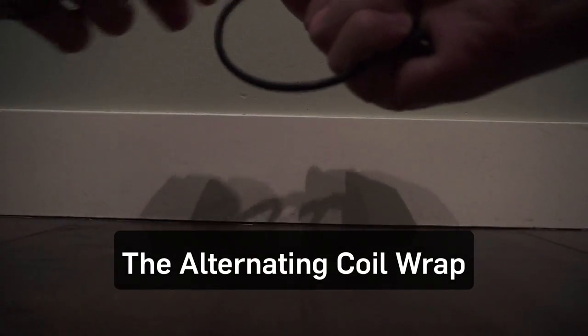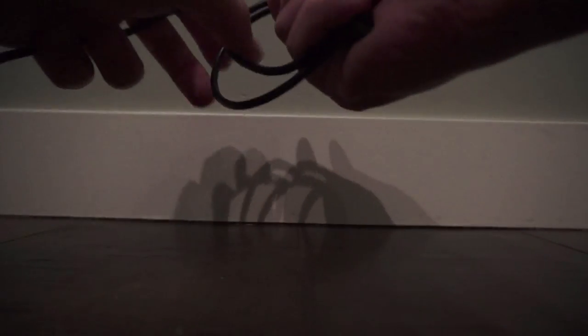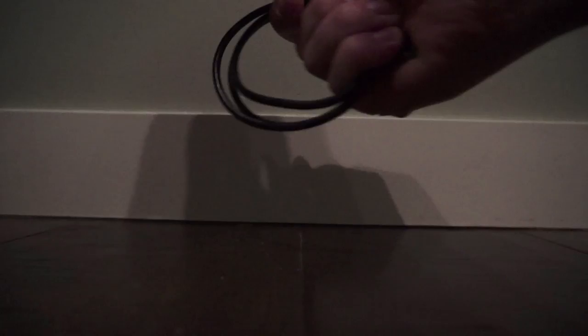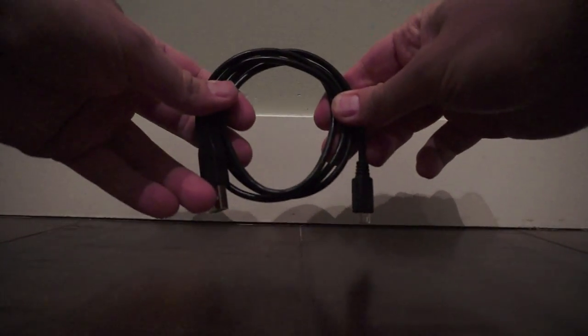First, let's learn the alternating coil wrap. If you need to make sure you don't end up with kinks and tangles in your cable, alternate the direction of your pull with each loop. This way your cable will unwind with ease.